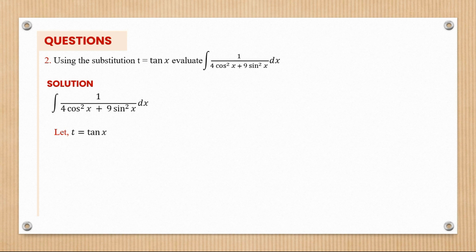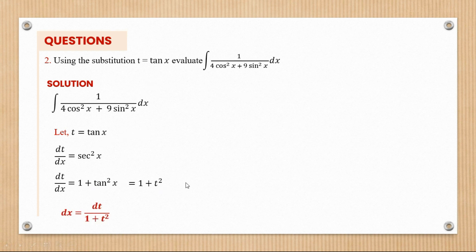We've already been told to let t equal tan x. So dt/dx gives us sec squared x. We know that sec squared x is the same as 1 plus tan squared x. Since t represents tan x, this becomes 1 plus t squared. Making dx the subject, dx equals dt over 1 plus t squared.